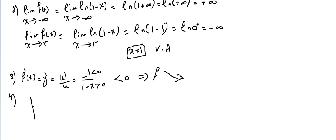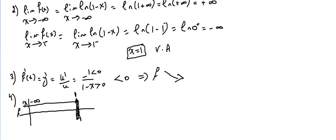Fourth, we draw the table of variation. x goes from minus infinity up to 1 (but cannot equal 1). f'(x) is strictly negative throughout, so the function is strictly decreasing. f(x) goes from plus infinity (as x → -∞) down to minus infinity (as x → 1⁻).